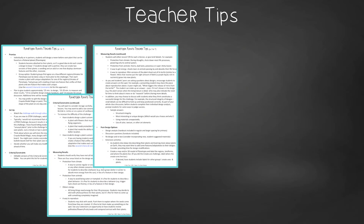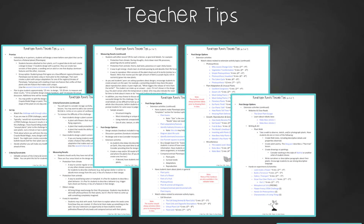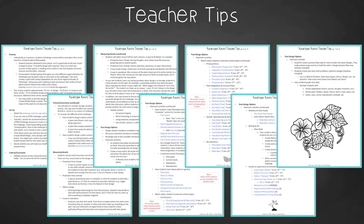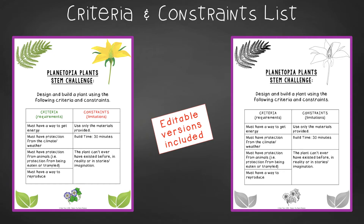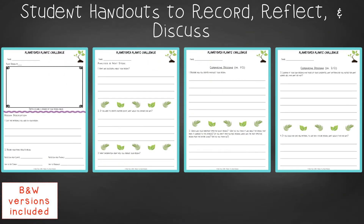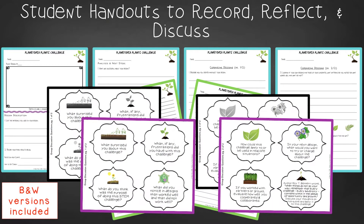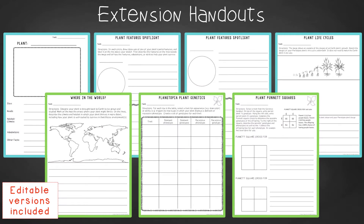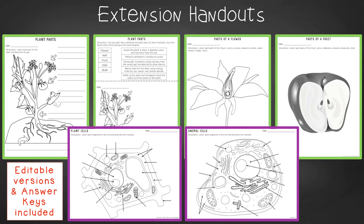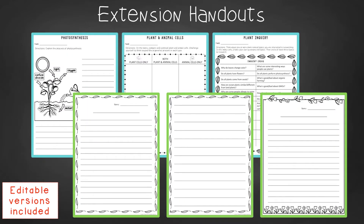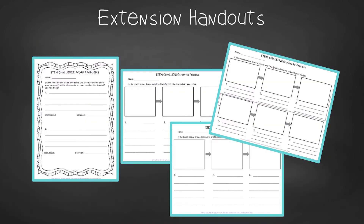In teacher tips, you'll find premise and setup, how to increase or decrease difficulty through the criteria and constraints list, measuring results, and cross-curricular extension suggestions. You'll find an editable criteria and constraints list so you can tailor the challenge to your students. For student handouts, there are two versions: a four-page expanded version with room for response for younger students, and a two-page condensed paper-saver version. You'll also find a set of group discussion questions. In the extension handouts, you'll find templates to make plant booklets or folders focusing on plant basics, features and adaptations, life cycles, and genetics and heredity. You'll find handouts for studying plant parts and functions, cells, photosynthesis, plant inquiry, and more, including math extension and process flow templates.